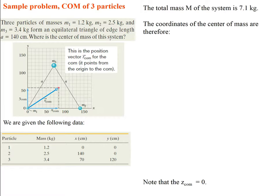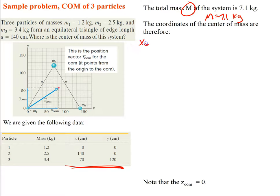So the center of mass is at one-third r from the origin — somewhere around here if r is over here, one-third of that is right there. Now let's do one more example with center of mass. We have three particles, and we're trying to find the center of mass of this system. We're given the masses for each particle, and they form an equilateral triangle with a side length of 140 centimeters. We can find the positions of each particle from the coordinate system given.